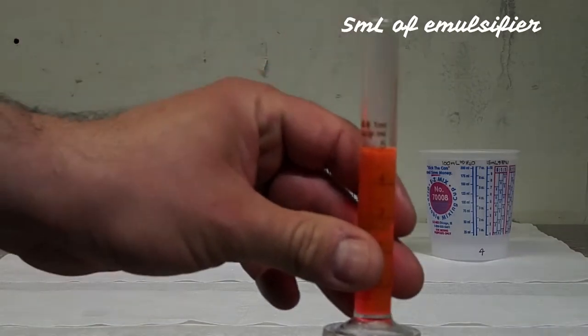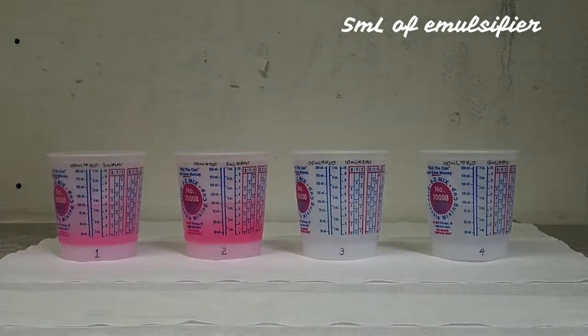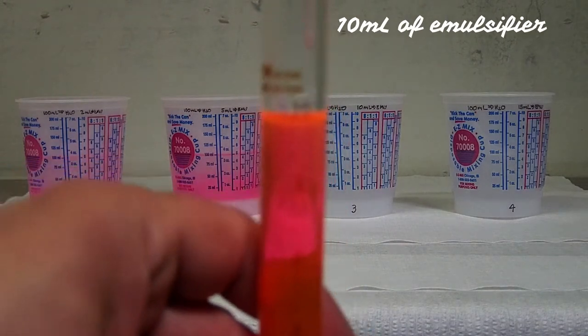Starting with two milliliters of emulsifier, continuing with five milliliters, 10 milliliters, and 15 milliliters.